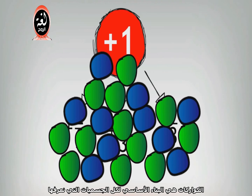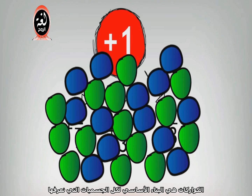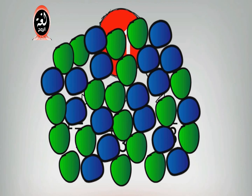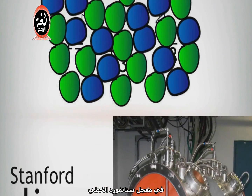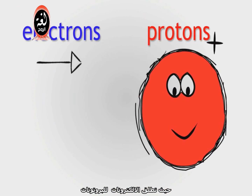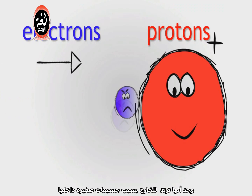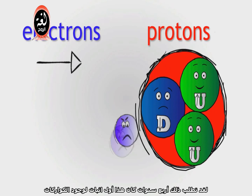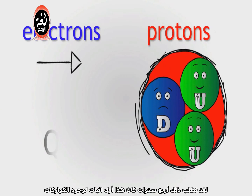Quarks are the fundamental building blocks of all particles that we know of. At the Stanford Linear Accelerator, electrons were fired at protons and found to bounce off of tiny particles inside them. It had taken four years, but this was the first evidence for the existence of Quarks.